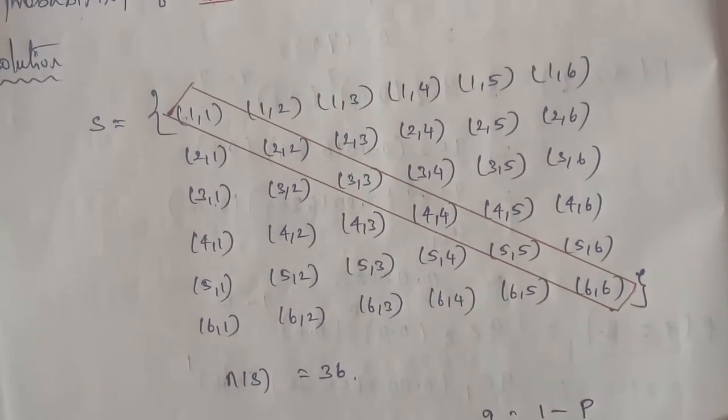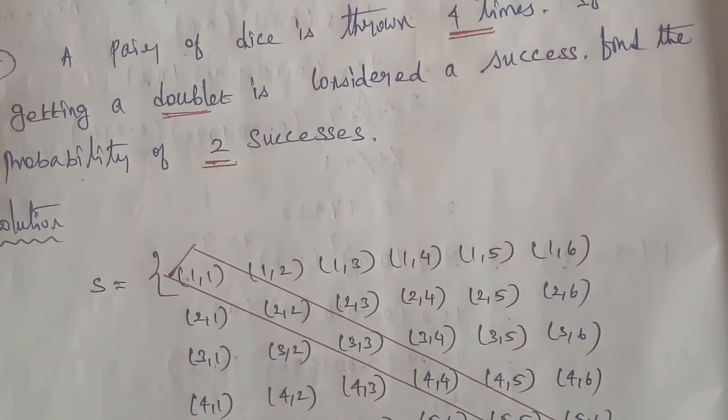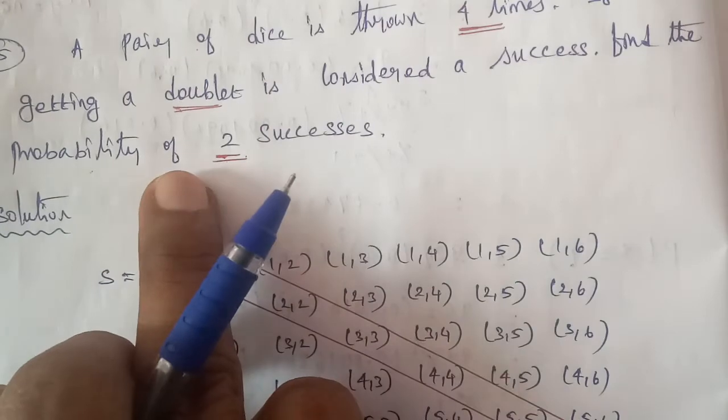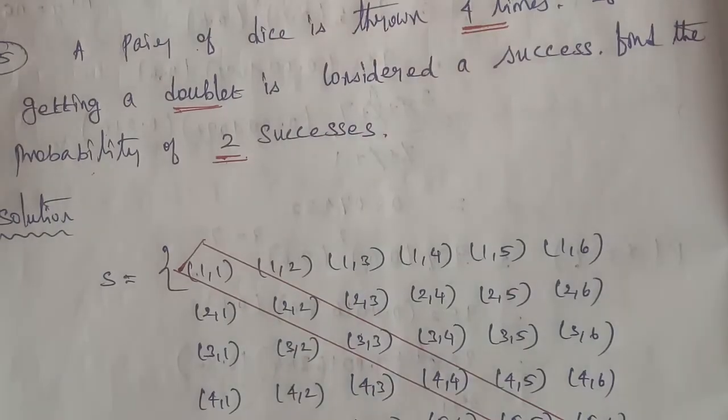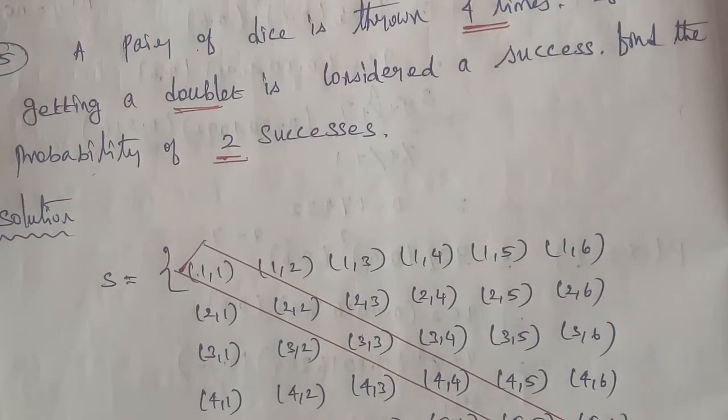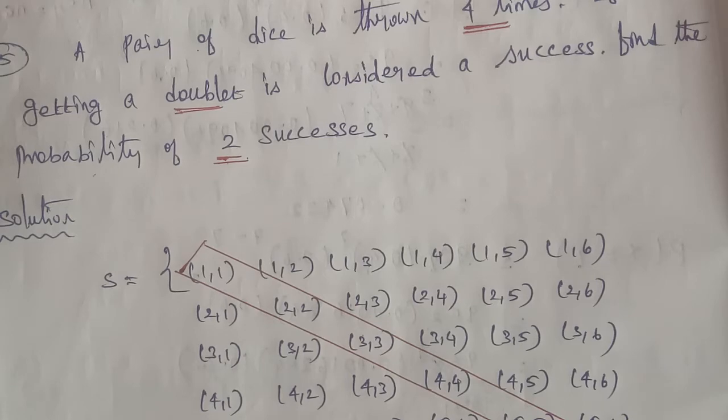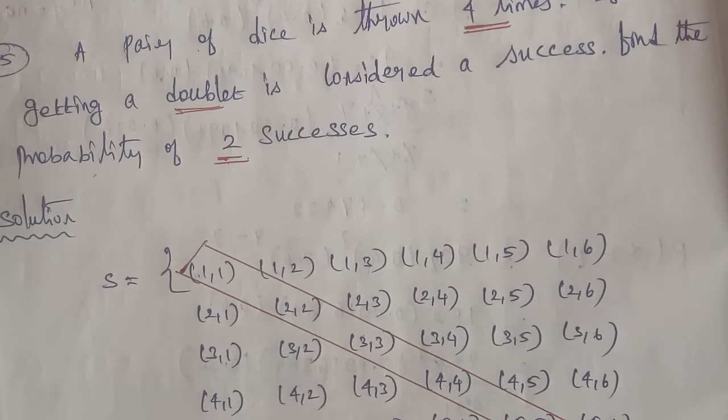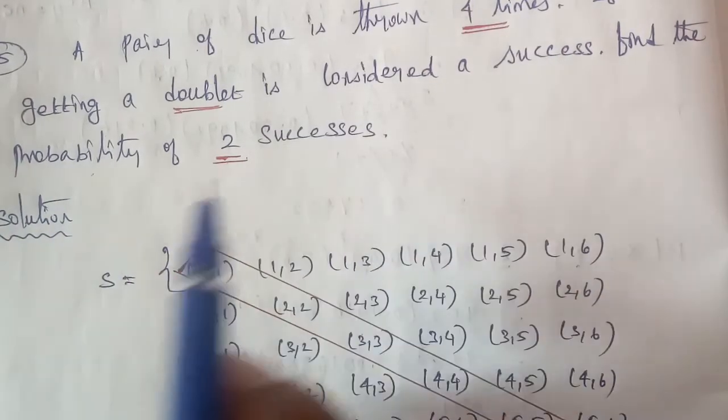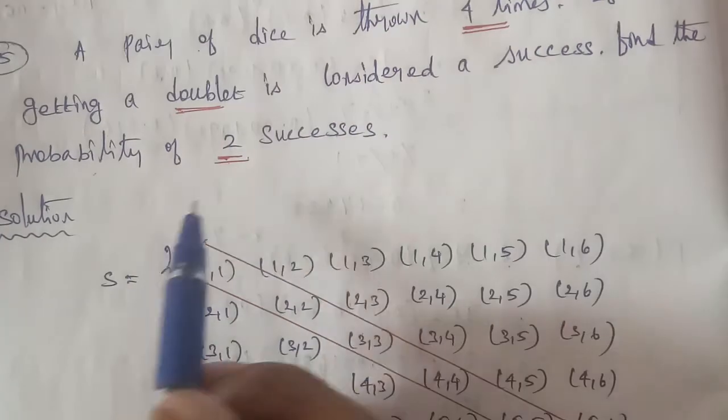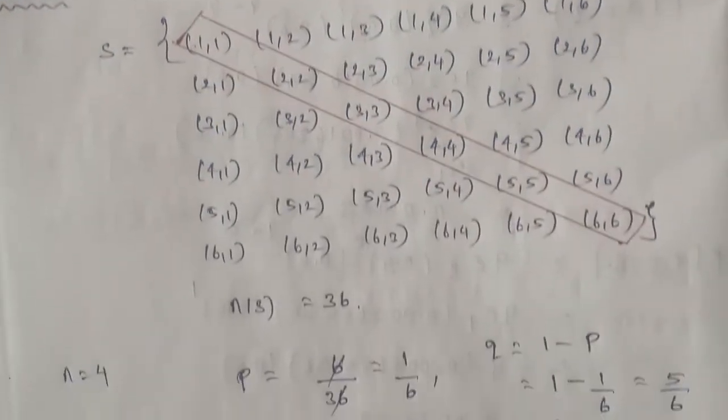Next, find the probability of two successes. So two successes means exactly two successes. It's not at least or at most, this is exactly.